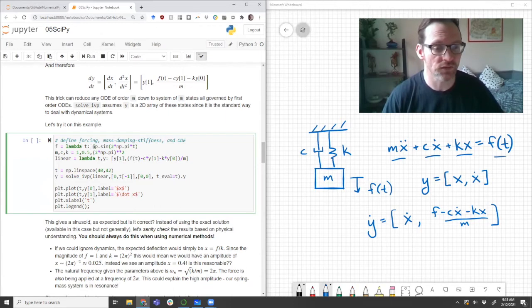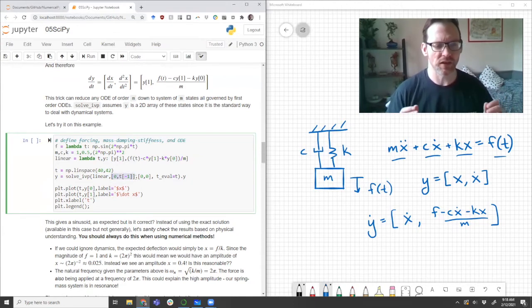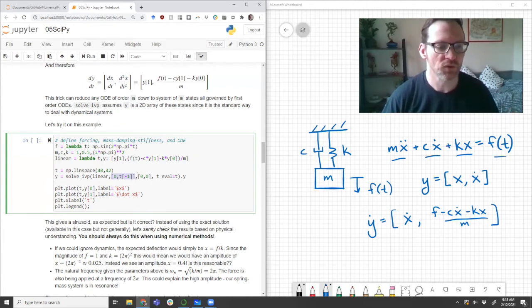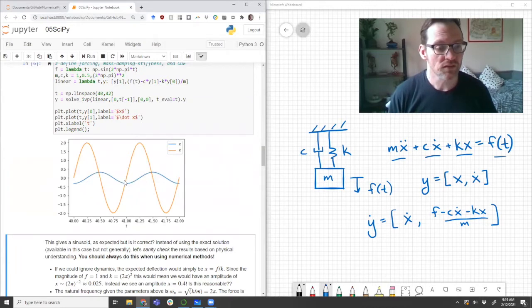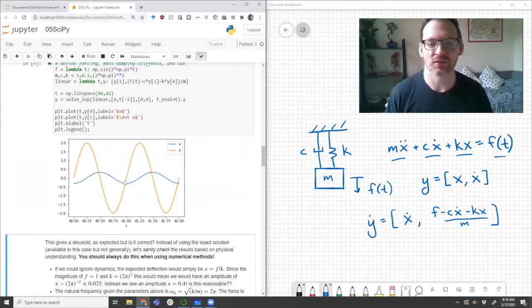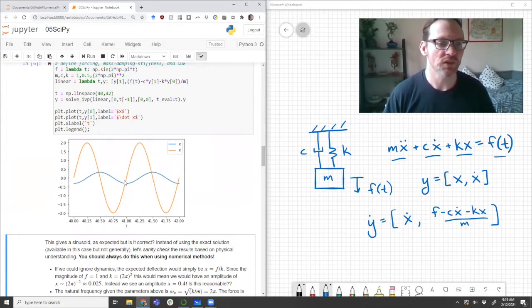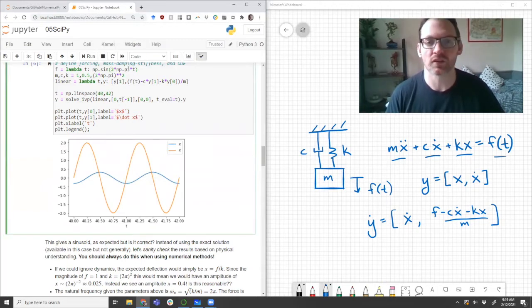So let's implement it. The force we can just assign to be a sine wave with a frequency 2 pi. We can give values for the mass damping and stiffness. And then we can define the linear oscillator ODE. The only additional coding trick here I've done is that I'm using this adaptive time step for the span to go from 0 to 42 cycles. But then I'm only evaluating it from 40 to 42. So I'm skipping the ramp up period and the plot will just focus on the last few cycles. And there's the result. We can see that we get two sine waves like expected.